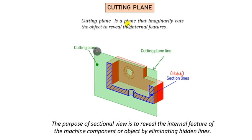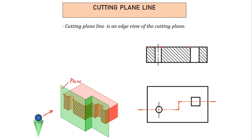The cutting plane is an imaginary plane that cuts the object to reveal the internal feature — not a real plane. The cutting plane line is an edge view of the cutting plane. When internal features are not able to be shown by a single full cut of an imaginary plane, we consider different types of cutting planes, which we will discuss in the coming slides.